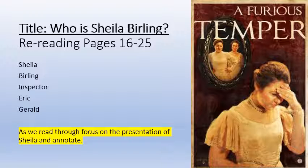Right, who is Sheila Birling — you've got your title already so don't worry about that. You want to reread pages 16 to 25. Obviously if we were in the classroom we'd be acting this out, but we're not, so read through it on your own and annotate and highlight anything that tells us about Sheila. Whenever we're looking at characters in these plays, we're looking at them through the prism of language and structure — looking at how language and structure have been used to present Sheila.